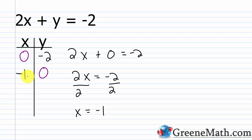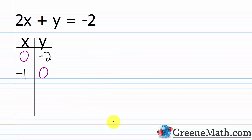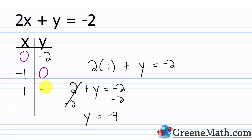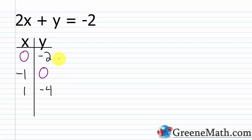Now I need a third point as a check. I always want to try to end up with nice small integers, so let me use 1. Plugging in 1 for x: 2 times 1 plus y equals negative 2, so 2 plus y equals negative 2. Subtract 2 from each side and y equals negative 4. So I have three ordered pairs: (0, -2), (-1, 0), and (1, -4).